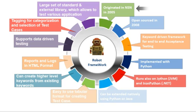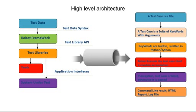Tagging is a very good feature — you can tag the test case and do a selective run with the help of tagging. It has a large set of standard and external libraries which allow testing of almost all applications. Standard libraries are part of the standard Robot Framework installation, whereas external libraries need to be installed separately.